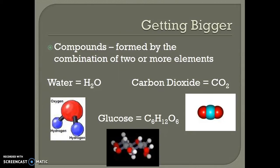Let's get a little bit bigger now. So we've talked about an element, which is pure, it's only one type of atom together. Well, what about if we want to combine two or more different atoms? When we do that, they're called compounds.